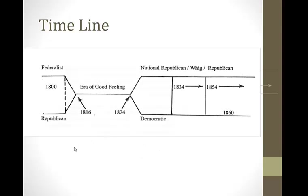To recap where we're at within this lecture, we've had the rise of the Federalist Party and the rise of the Republican Party over Hamiltonian fiscal policy with the National Bank and the Assumption Program. This is going to basically be a political contest between these two political parties going back and forth in various elections until we get to the era of good feeling.